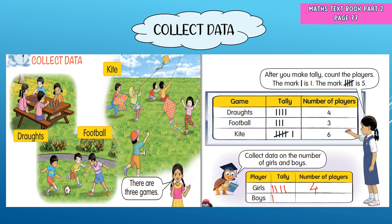Now look at the boys. There are two boys playing draughts, three boys playing football, and four boys playing kite. Let us count together: one, two, three, four, five, six, seven, eight, nine. The total number of boy players is nine.